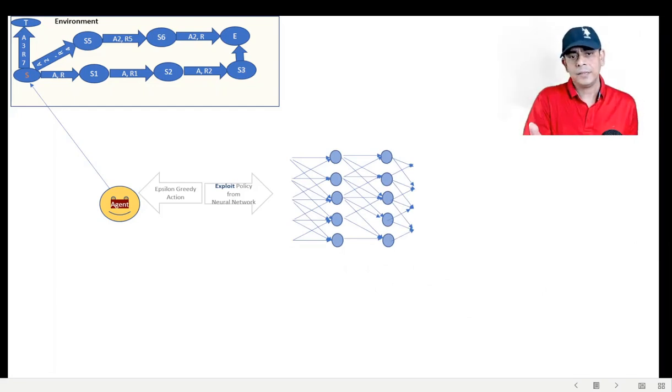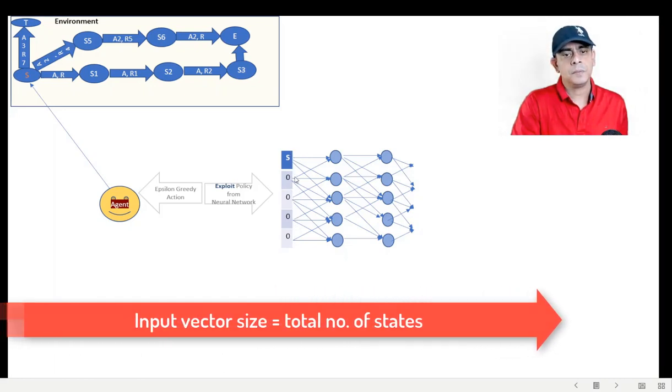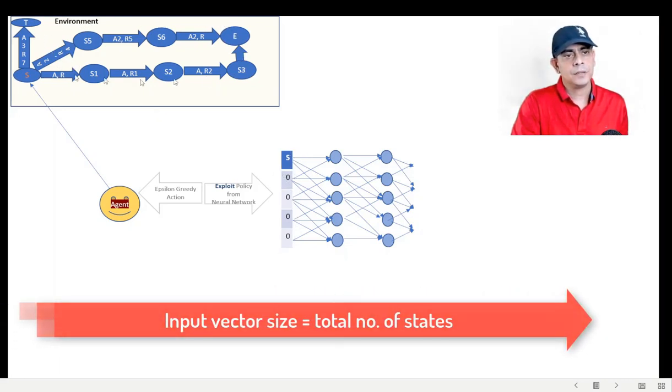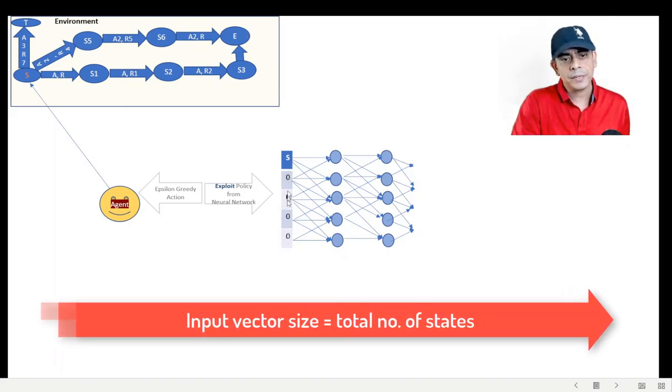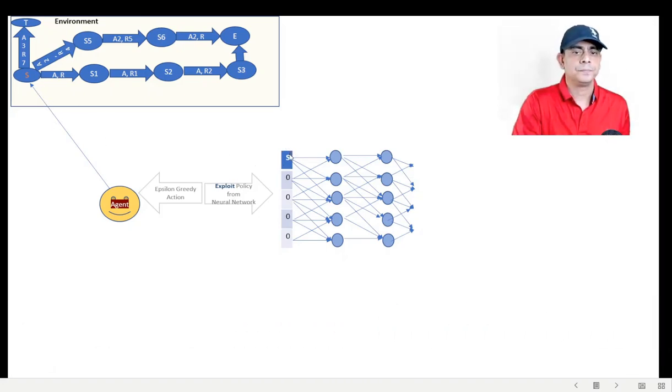So the lookup table in case of deep reinforcement learning is a neural network. Here we need to input the state, but the state is a scalar, therefore we apply one-hot encoding to make it in a vector form. The size of this vector is the total number of states present here. All of them are 0 except the state which we are interested in.